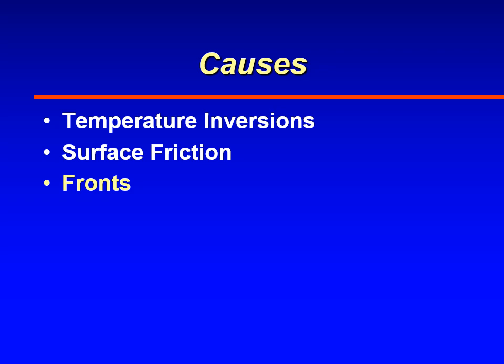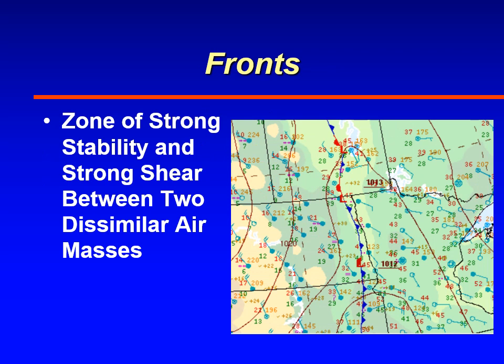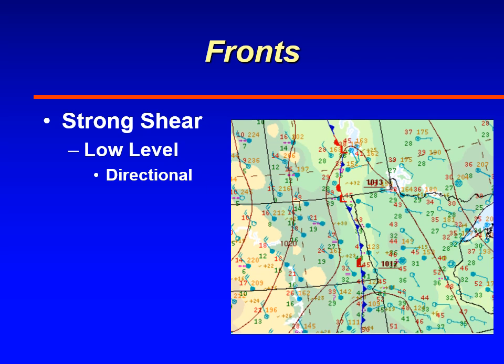The last cause we'll look at where you can experience low-level wind shear is with fronts. Fronts are a zone of strong stability and also strong shear between two different air masses. Down low, typically the shear is directional — you will have strong winds, but the shear you're looking at down low is directional.